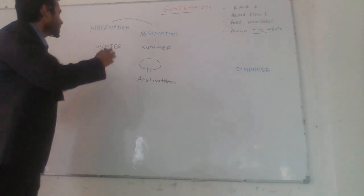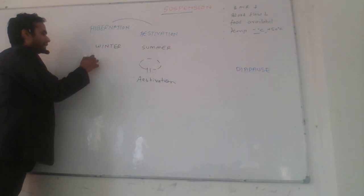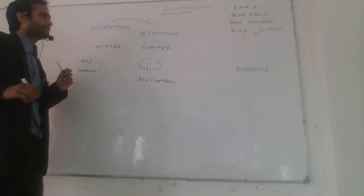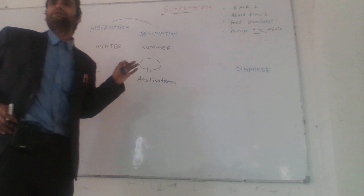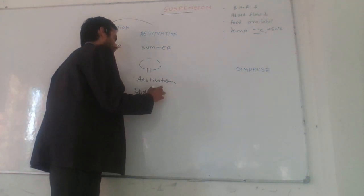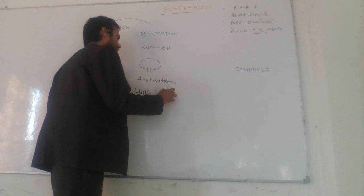Winter sleep, summer sleep. Hibernation found in the cold-blooded animals as well as warm-blooded animals. In all the organisms, hibernation is found. Estivation mainly found in the lungfish.